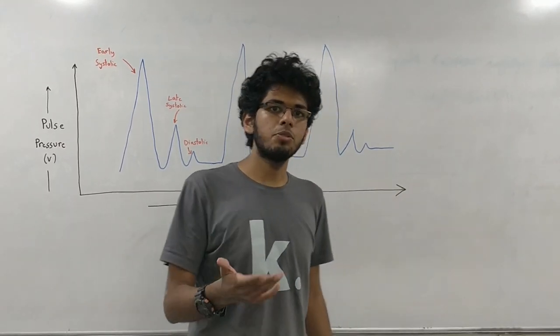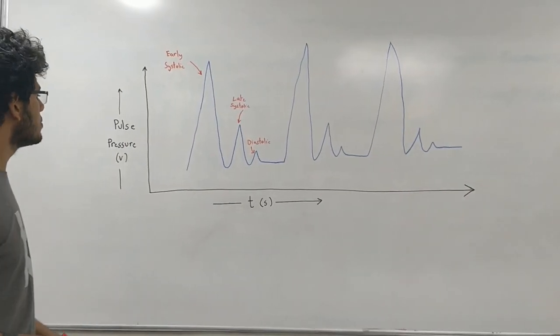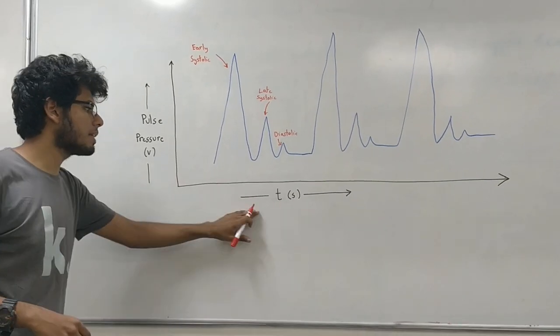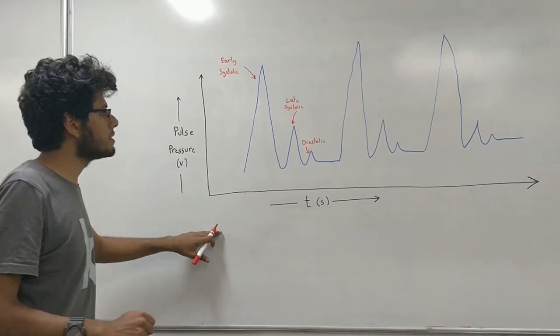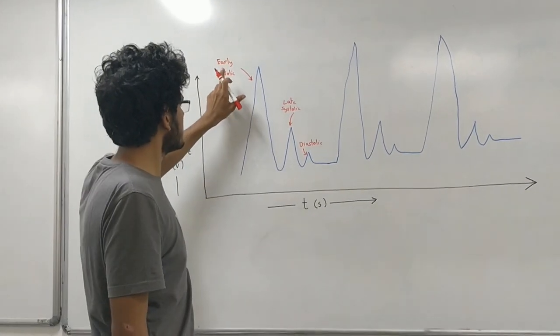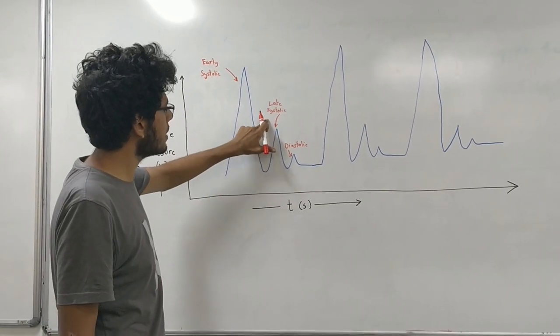I will explain to you the algorithm which has been used to process the sensor data. Over here we have a pulse pressure versus time graph of a normal human heart. It consists basically of three pulses: the early systolic, the late systolic, and the diastolic.